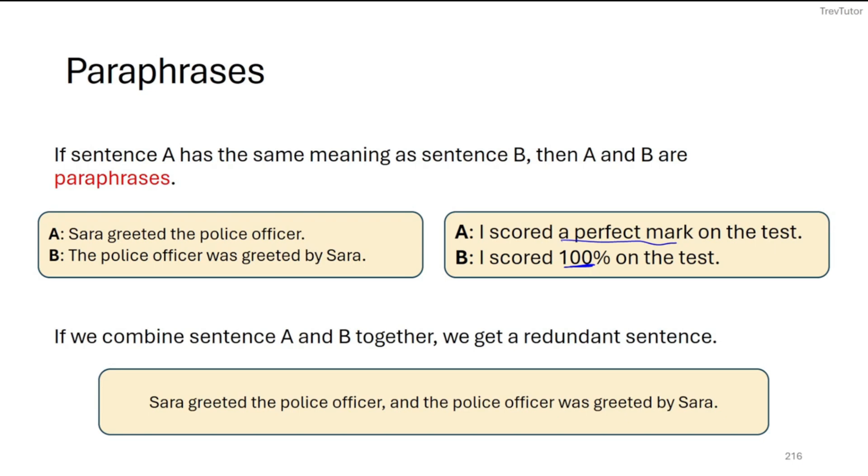And how we can identify paraphrases is by joining two sentences together into one. And if it is a paraphrase, it sounds quite redundant. Sarah greeted the police officer and the police officer was greeted by Sarah. Okay, we just said the same thing twice. This is redundant. So that's how we can identify paraphrases.